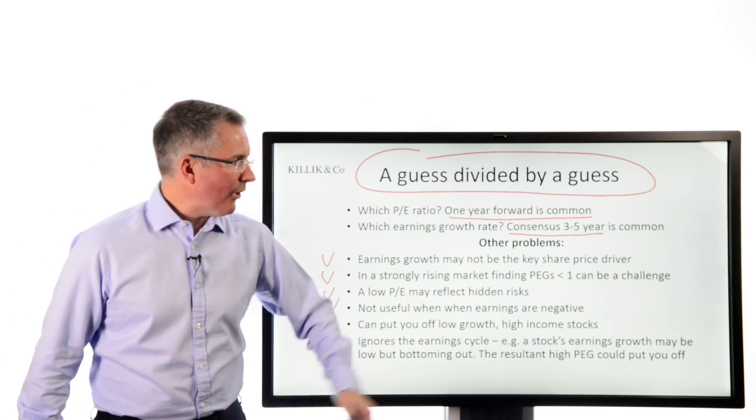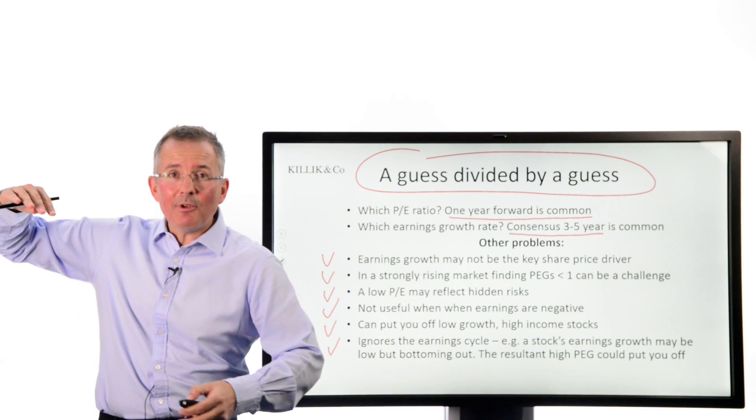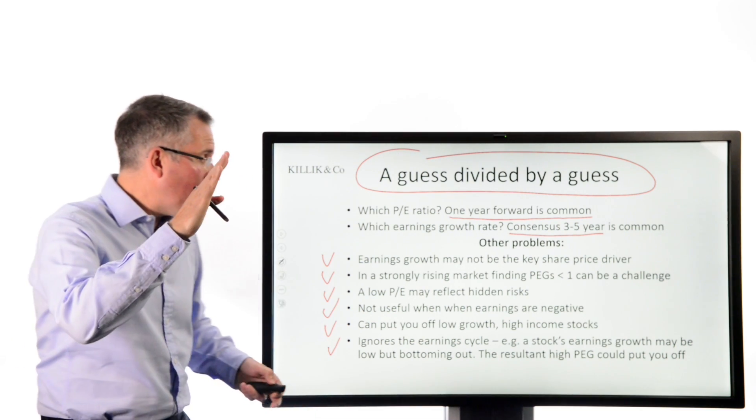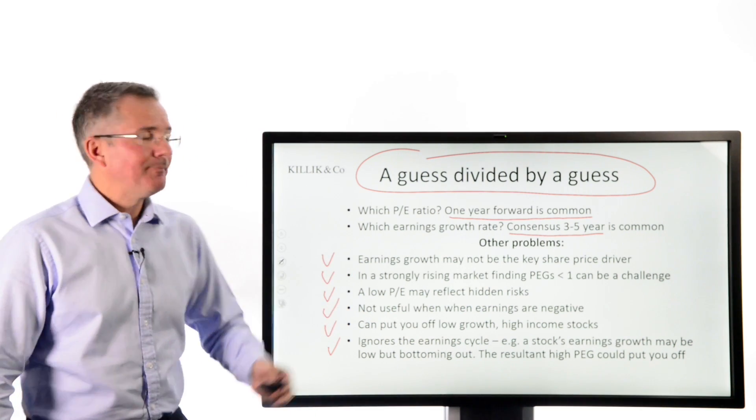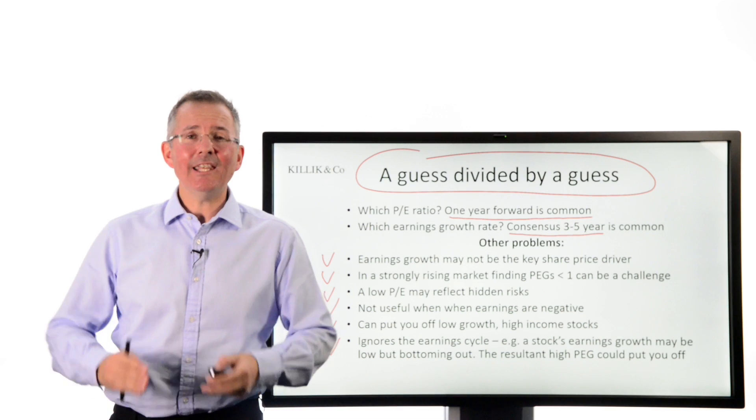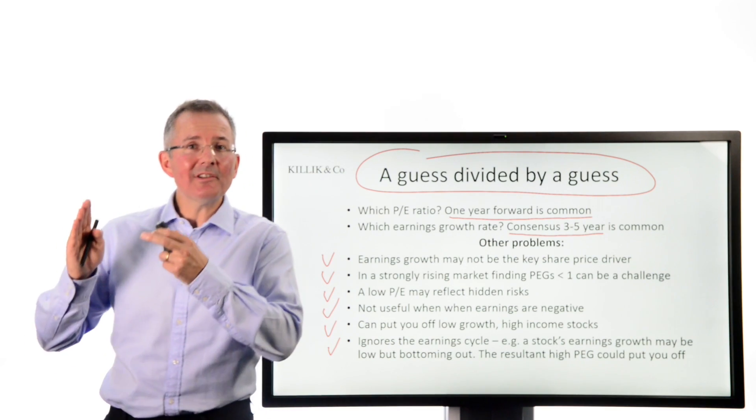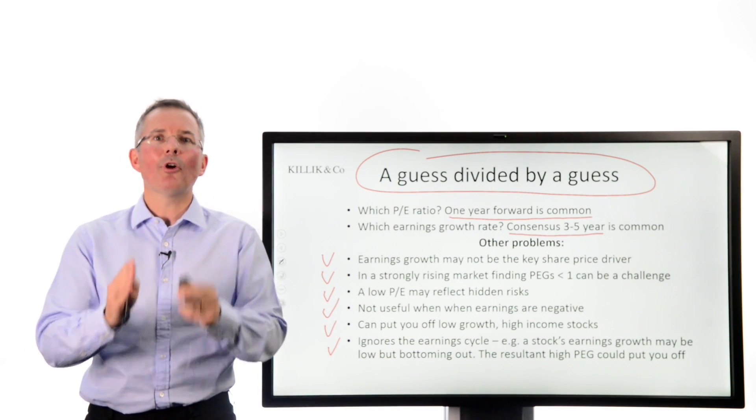And it ignores the earnings cycle. You might miss out because a stock's earnings growth might be really low, but bottoming out. But the PEG, which is high, is telling you not to touch it. So you need to understand where the company is in its earnings cycle to really use this properly.